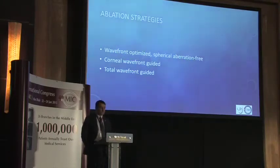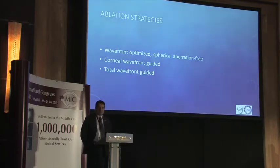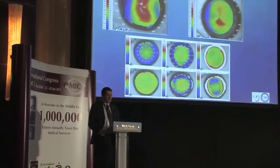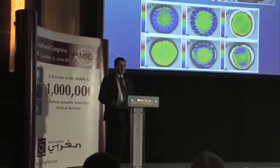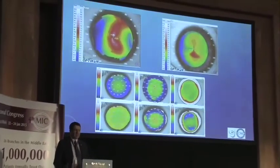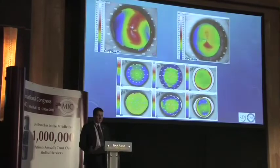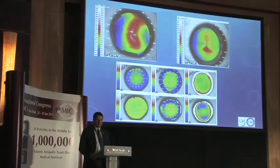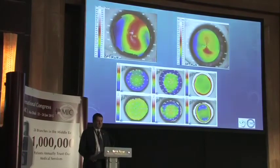What strategies can you apply in these cases? You can do a conventional wavefront-optimized or spherical aberration-free procedure, but in most cases the most accurate procedures are either corneal wavefront-guided or corneal total wavefront-guided, because you want to fix some irregular situations. A standard aberration-free ablation cannot fix astigmatism in these cases because it performs like a regular-shaped ablation pattern — these cases require a customized approach.